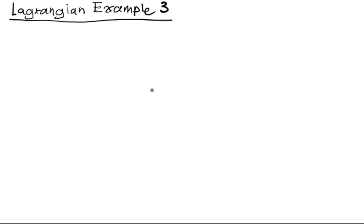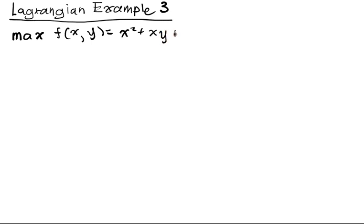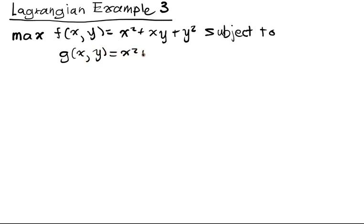Let's do an example where we work through a function with two variables subject to one inequality constraint. We're going to maximize f equal to x squared plus xy plus y squared, subject to g of x, y equals x squared plus y squared is less than or equal to 1. This is just the unit disk in R2, and we want to maximize this quadratic function on it, which seemingly should not be such a difficult problem.